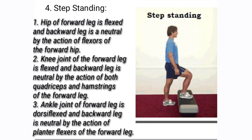The next position is step standing. Here, the hip of the forward leg is flexed and the backward leg is in neutral by the action of the flexors of the hip of the forward leg. The knee of the forward leg is flexed and the backward leg is in neutral by the action of both the quadriceps and hamstrings of the forward leg.